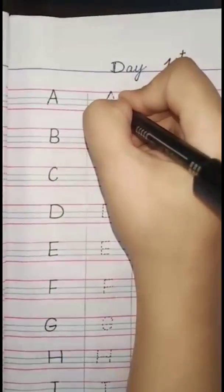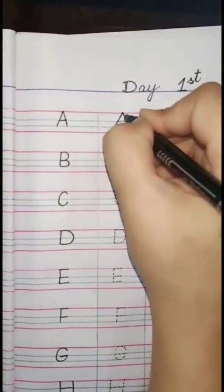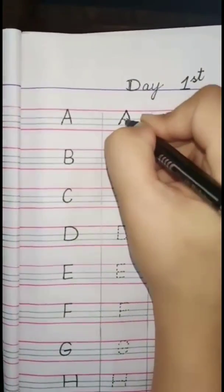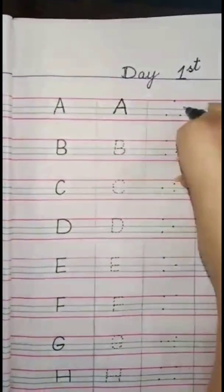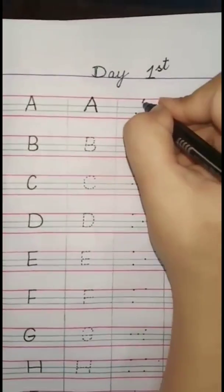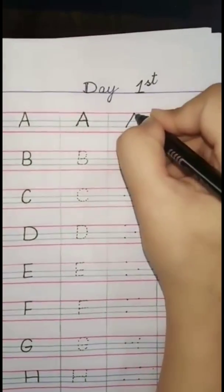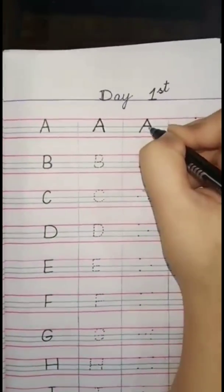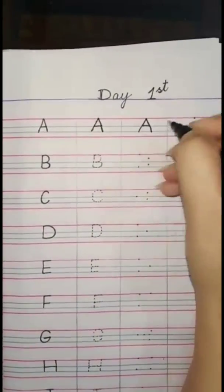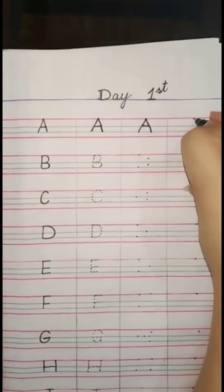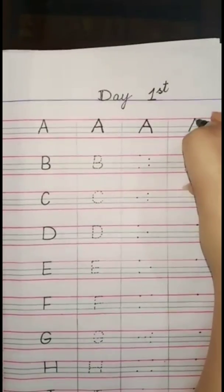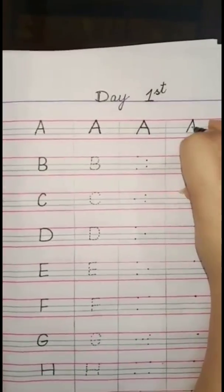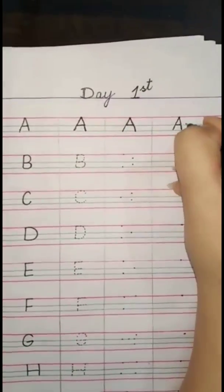We write A on tracing first. Then we write it on three dots. We write capital letters on the first three lines. A — Apple.